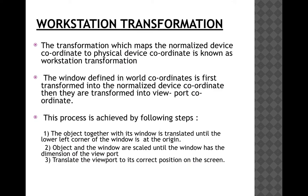After converting world coordinates to normalized coordinates, we need to display them on the device screen. This transformation of object description from normalized coordinates to device coordinates is called workstation transformation. In total, we first convert world coordinates, clip them in the window, present them in the viewport of normalized device coordinates, and then transform them into a viewport of device coordinates — this is the complete viewing transformation procedure.